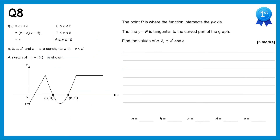We start this question by looking at the middle curved section. We're told its function is (x minus c)(x minus d). Since the graph crosses the x-axis at (3, 0) and (5, 0), c and d must be 3 and 5. We're also told c is less than d, so c equals 3 and d equals 5.